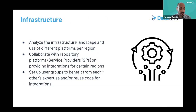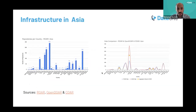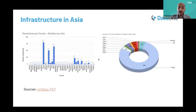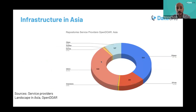The second component is infrastructure. We are currently analyzing the infrastructure landscape of PIDs in our GAP regions, planning to collaborate with repository platforms and service providers, and aiming to set up end-user groups to benefit from each other's expertise. Here is a snapshot from the infrastructure report for Asia. We used standardized data sources like OpenDOAR and ROAR to understand the number of repositories, and we're also looking at data sources like Re3Data and other products to assess PID installations and service providers within Asia.